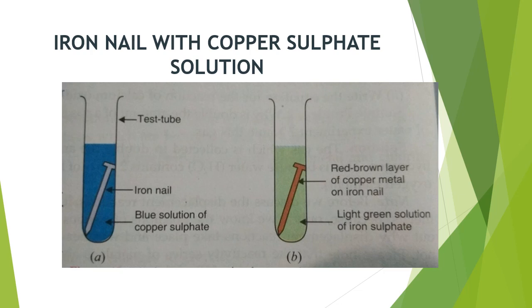Next example is the reaction of iron nails with copper sulphate solution. When we drop an iron nail into an aqueous solution of copper sulphate, the colour of the copper sulphate changes from blue to grey. At the same time, the iron nail changes from dark grey or black to brown in colour. These changes indicate a chemical reaction.